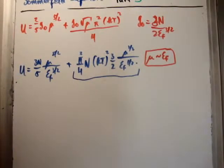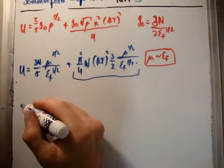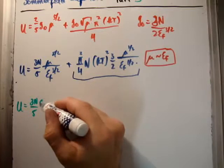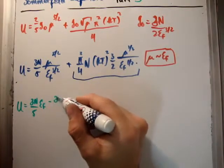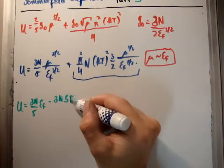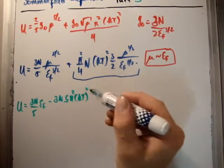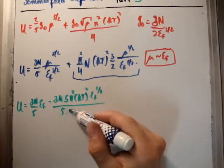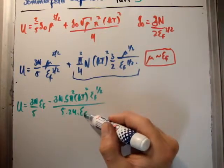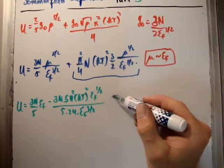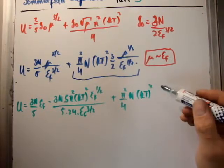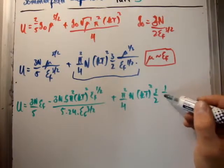So if you plugged it in, once again, just being very careful with your algebra, you're going to get the following. And this is a bit nuts. So just going to bear with me. So 3n over 5 E Fermi minus 3n times 5 pi squared kT to be squared E Fermi to the half divided by 5 times 24 times E Fermi to the 3 over 2. And we're going to have to add this extra smaller term, n kT to be squared, 3 over 2, 1 over E Fermi.